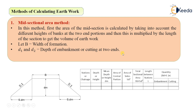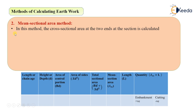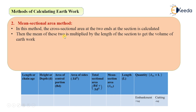We will also see this method in detail in the numericals. The second method is mean sectional area method. In this method, the cross-sectional area at the two ends of the section is calculated, then the mean of those two areas is multiplied by the length of the section to get the volume of earthwork. In the previous method we were taking the mean depth; in this method we take the mean cross-sectional area — that is the only difference.